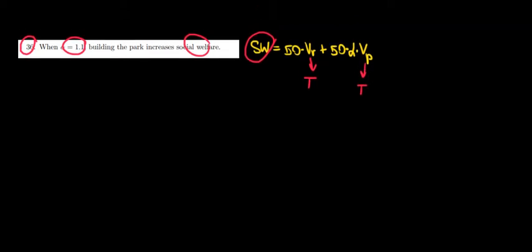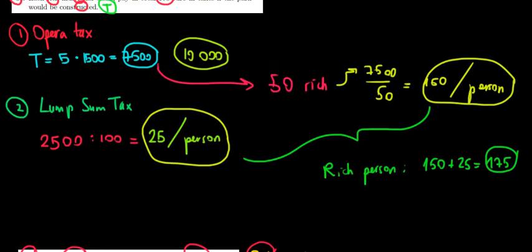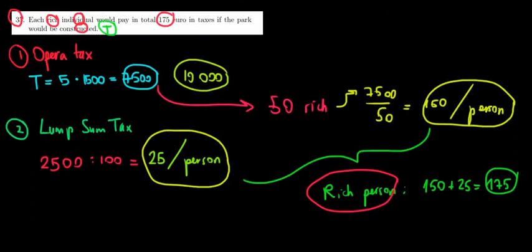What we saw before is that for the rich people we have to take in mind two taxes: the taxes from the opera tax and the lump sum tax, the 175 euros that the rich person has to pay.